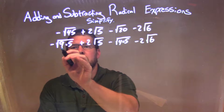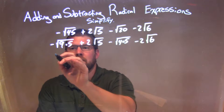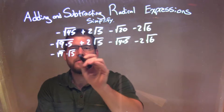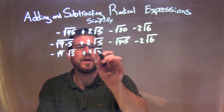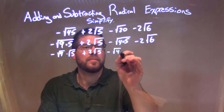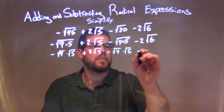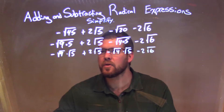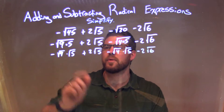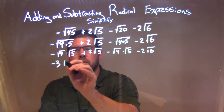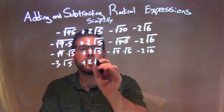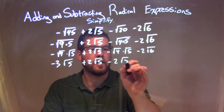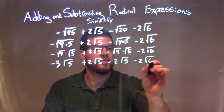So now I can break this apart a little bit — the 9 and then the 5. The 9 times 5 can be minus the square root of 9 times the square root of 5, plus 2 square root of 5 here, minus the square root of 4 times the square root of 5, minus 2 square root of 6. The square root of 9 is just 3, so we have minus 3 square root of 5 here, plus 2 square root of 5, minus the square root of 4 — which is 2 — times square root of 5, minus 2 square root of 6.